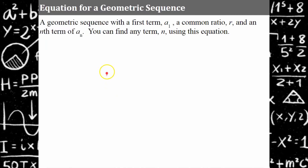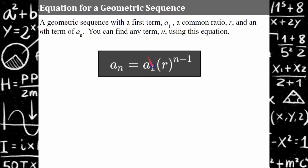Since the graph follows an exponential curve, the equation for any term of a geometric sequence is: a_n = a₁ · r^(n−1), where a₁ is the first term, r is the common ratio, and n is the term number. The exponent n−1 represents how many times you multiply by r — you start at term 1 and take one fewer jump than the term number you want to reach.